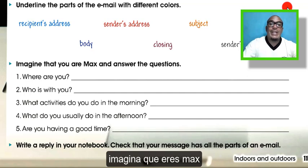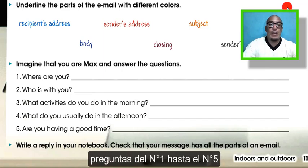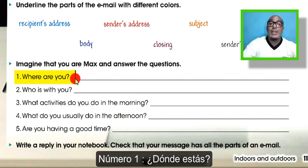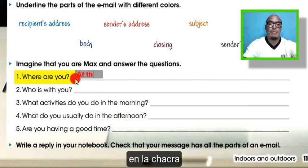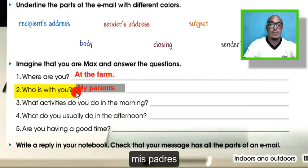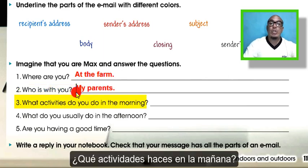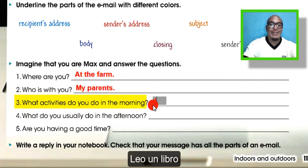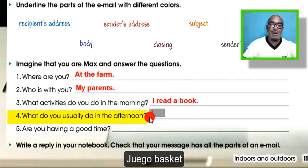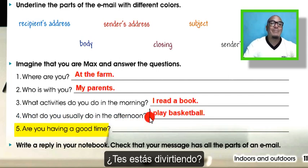To complete the activity, let's imagine that you are Max and answer the questions. Okay, for example, we have questions from number one to number five. Are you ready? Let's do it! Number one: where are you? At the farm. Number two: who is with you? My parents. Number three: what activity do you do in the morning? I read a book. Number four: what do you usually do in the afternoon? I play basketball. Number five: are you having a good time? Yes, I am!